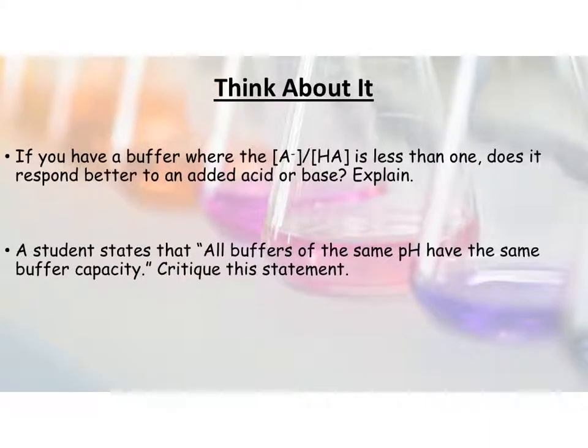All right, so if you have a buffer where your ratio between your acid and your conjugate base is less than 1, is it going to do better if you add added acid or added base to it? So if you have a situation where you have a value less than 1, what does that tell you? Hopefully you're going to tell me that tells you is that you have a bigger number of acid than you do conjugate base.